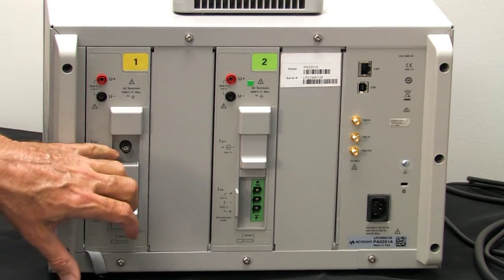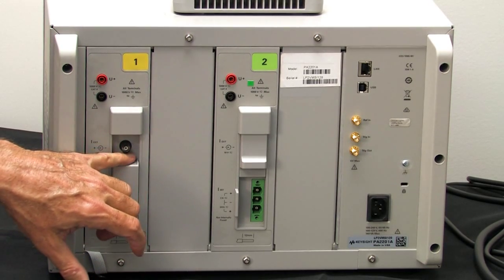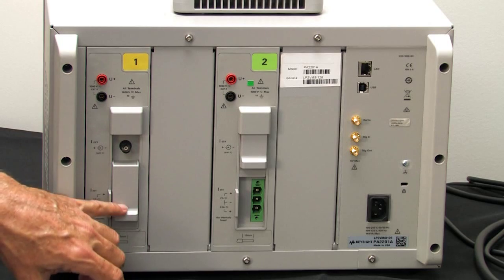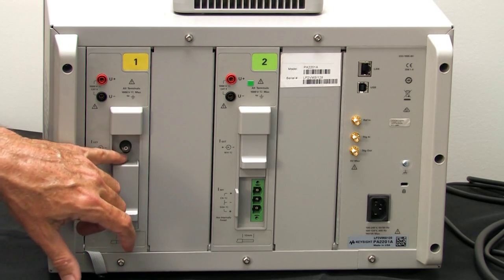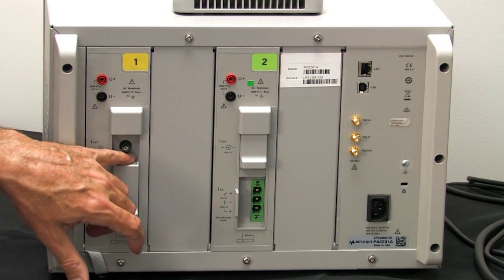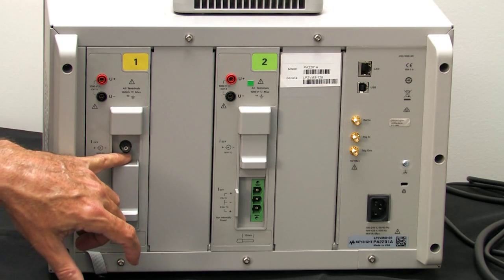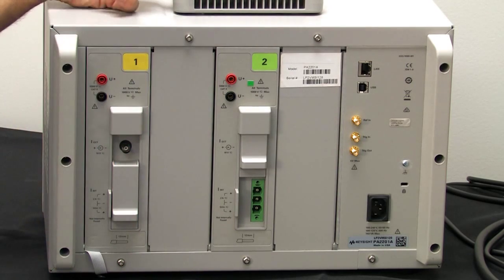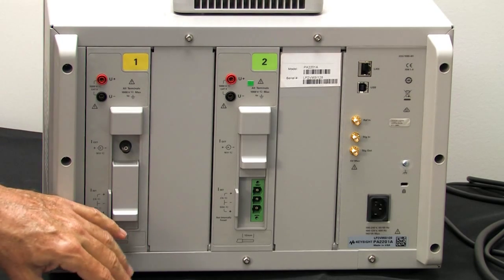There's also a BNC connector for each of the current inputs. You can choose between either shunt or the BNC, and the BNC accepts a 0 to 10 volt signal from a current probe or a current transformer, and you can set the ratio on the front panel of the power analyzer to accommodate your transformers or your current probe.